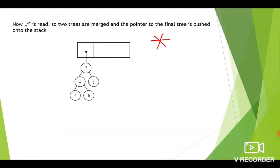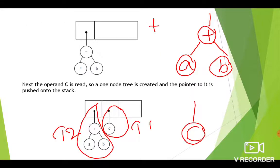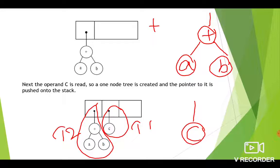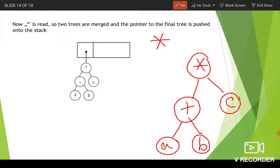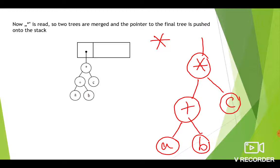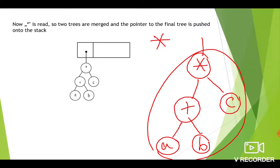We create a new tree with '*' as the root, t1 ('c') as its right child, and t2 (the '+' subtree with 'a' and 'b') as its left child. After creating this tree, a pointer to it is pushed onto the stack. Since we have processed all symbols in the given postfix expression, the procedure is complete, and this is the constructed expression tree for the postfix expression a b + c *.